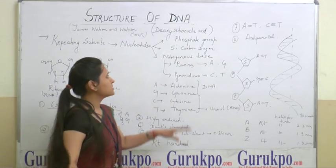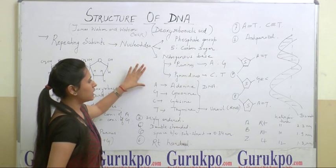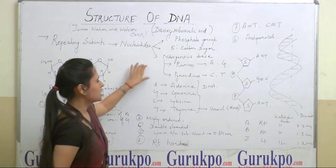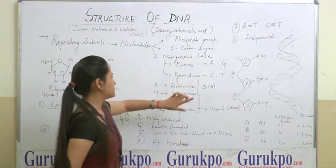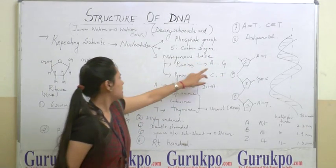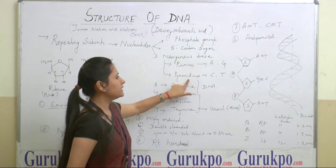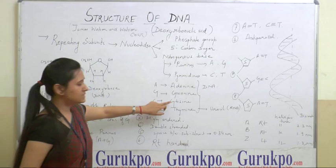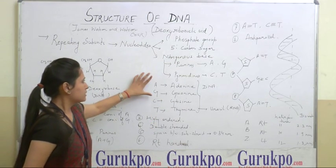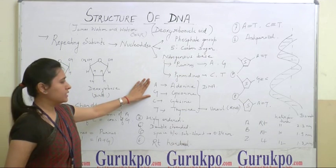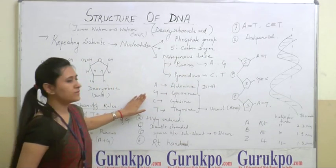Let's talk about the nitrogenous bases. There are two kinds: they can be purines or they can be pyrimidines. Purines consist of A and G — A stands for adenine and G stands for guanine. Similarly, pyrimidines have two kinds: C that is cytosine, and T that is thymine. Purines are double ring structures whereas pyrimidines are single ring structures.